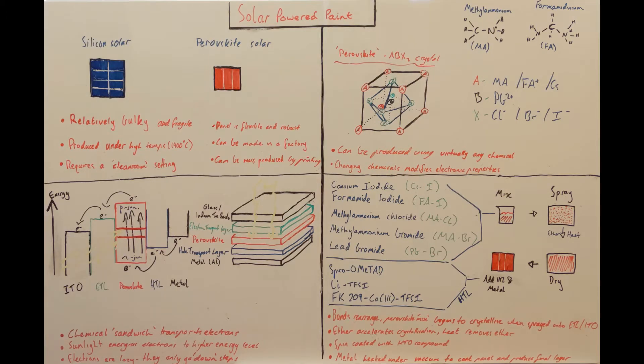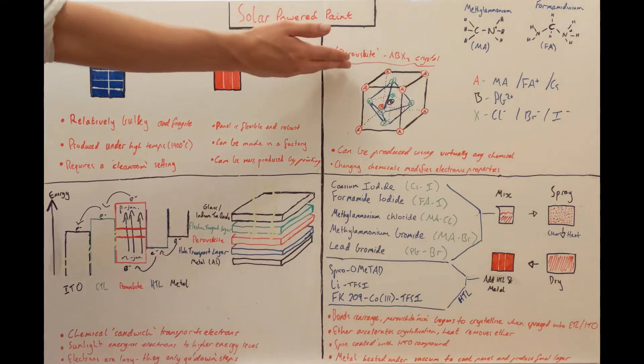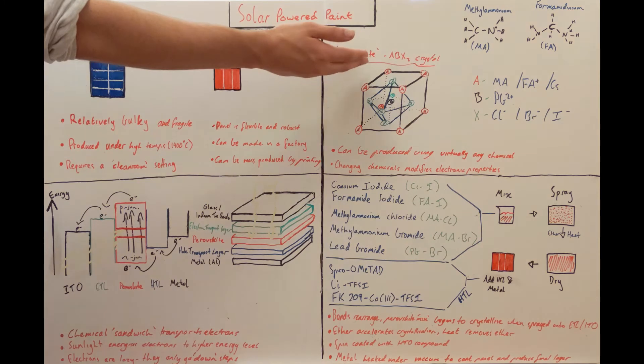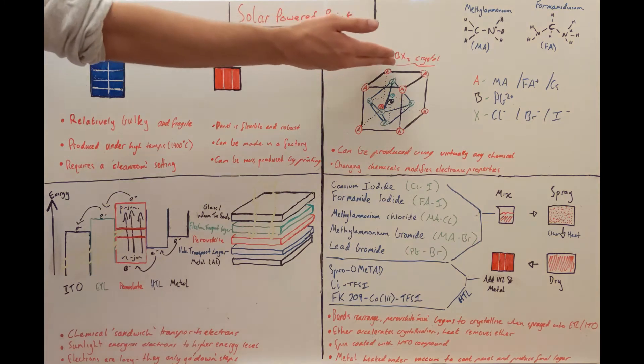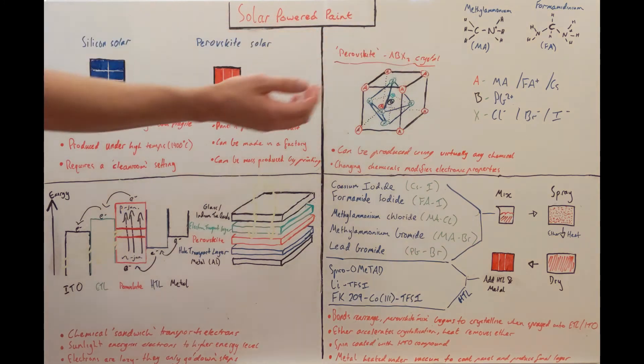So how do these perovskite panels work? The term perovskite actually refers to a polymorphic crystal structure, which is nicknamed ABX3.